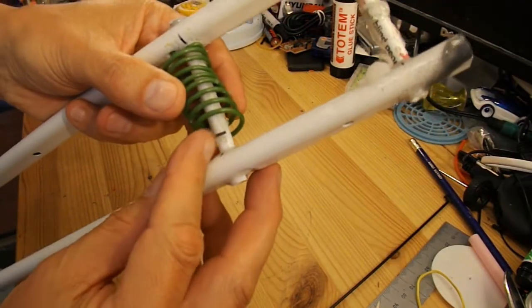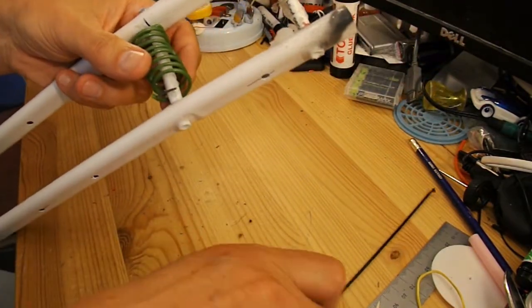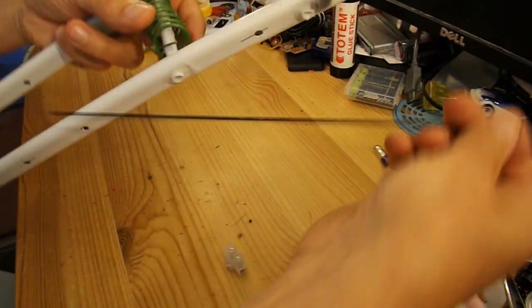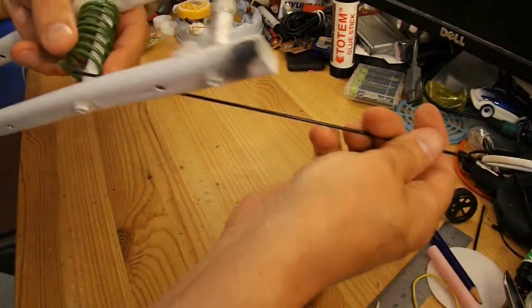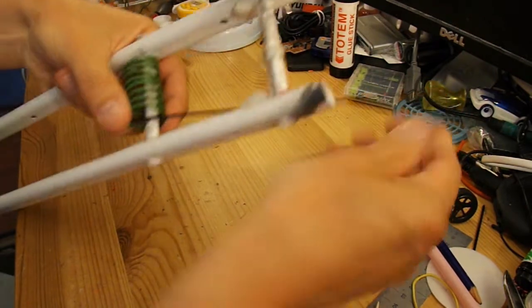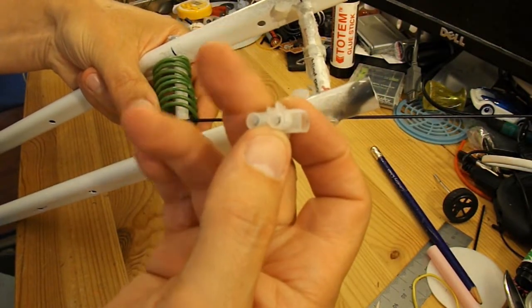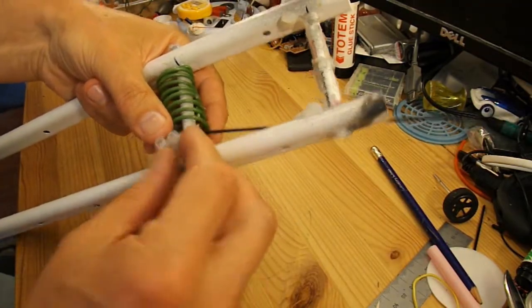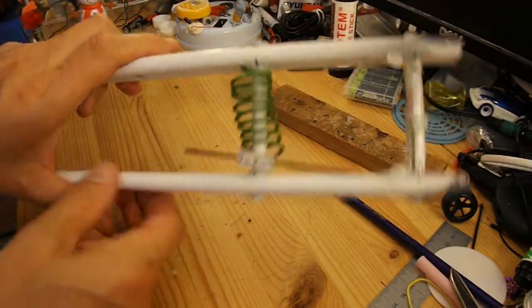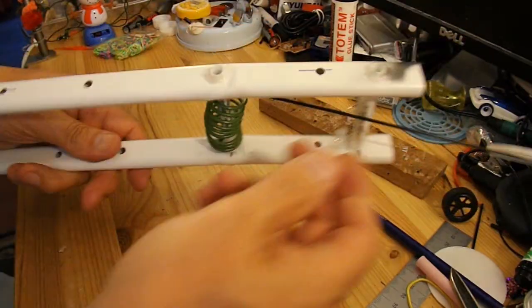So now we need to extend this. I'm going to use a bicycle spoke here as the lever arm, and I'm going to use this electrical connecting block to join the two together. There we are, that's joined it together.